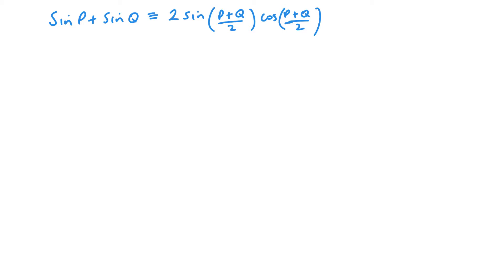Let's look at the first one: sin P + sin Q equals 2 sin((P+Q)/2) cos((P-Q)/2). Now, as shown in the formula booklet it uses A and B instead of P and Q, but I'm going to stick with P and Q as I think it makes more sense when I show you how to derive it. You can replace them with any letters you prefer.